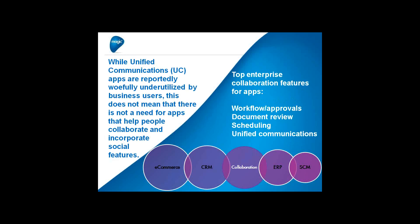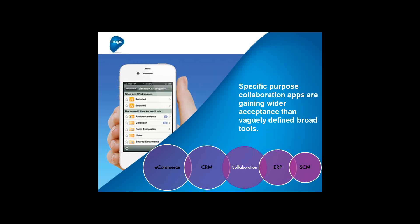Looking at unified communications in the area of collaboration, the apps are reportedly very poorly utilized by users. Top enterprise collaboration features for apps seem to be things like workflow and approvals, document reviews, scheduling, and unified communications. Unified communications is not the killer app that many people thought it would be for mobile, but there is a need for specific-purpose collaboration apps, which are gaining wider acceptance than vaguely defined broad tools.